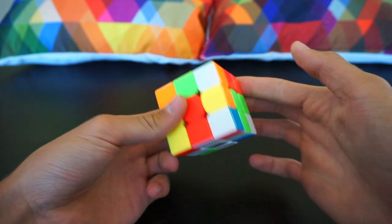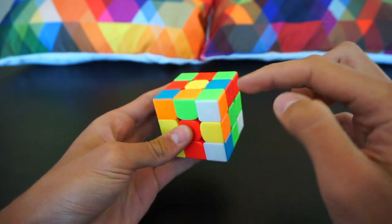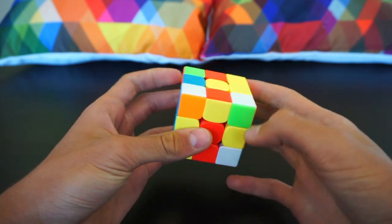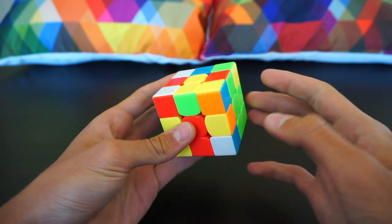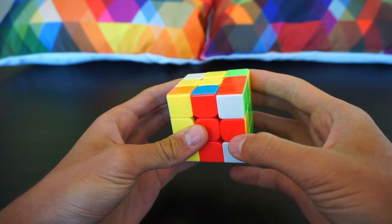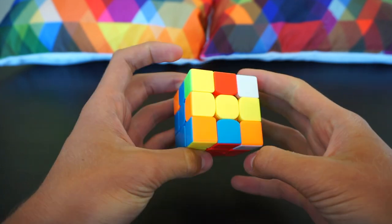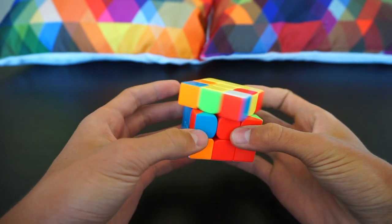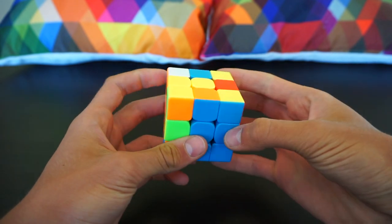Here we have an easy F2L case, break them up and insert it. Then here we have this case: R, U2, R prime, and insert it. Now here we have this case yet again, pair them up and insert it.